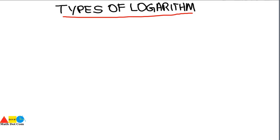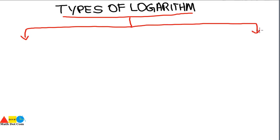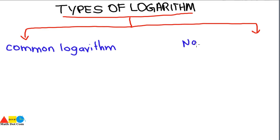Previously we have seen what is log and how it is related to exponents. In today's lecture we are going to discuss that the logarithm is classified into two types. It is classified on the basis of the base of the log, and the two bases used most often are the common logarithm and the natural logarithm. Let's see how they are defined and how they differ from each other.